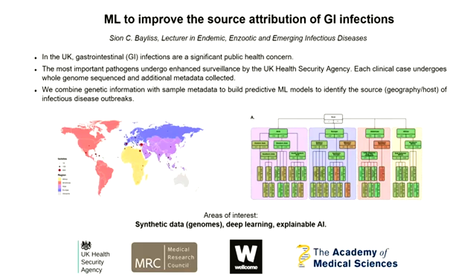We're focused more on the public health and genomic side of things, but areas of interest for collaboration might be how we might generate synthetic data from these genomes, how we might more effectively apply deep learning to genomics data — which is a challenge for deep learning at the moment — and how we might approach this using explainable AI, because there's a real need for us to have evidence trails in how we deal with this data so that we can integrate it with public health policy decision making. Thank you very much for listening, and I look forward to talking with you later.